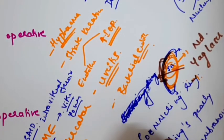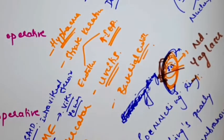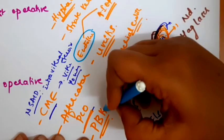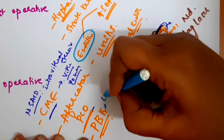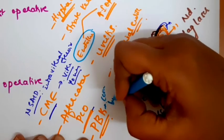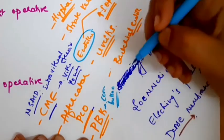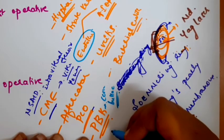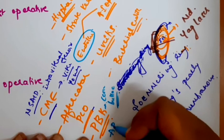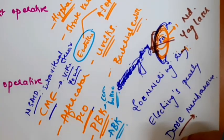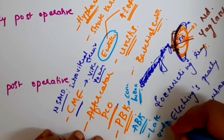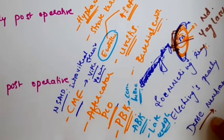The next complication is pseudophakic bullous keratopathy (PBK). This occurs when the endothelium has not regenerated after surgery — endothelial decompensation leads to corneal edema with bulla formation. This can even occur when the lens is left aphakic, called aphakic bullous keratopathy. Late endophthalmitis can also occur. These are the complications of cataract surgery.